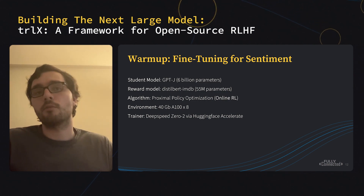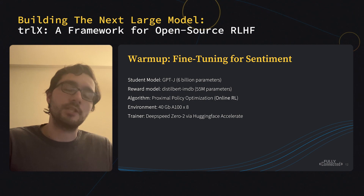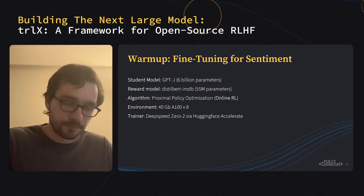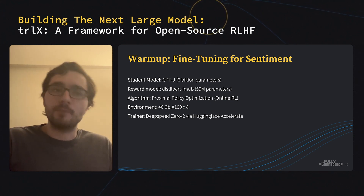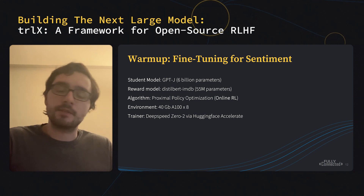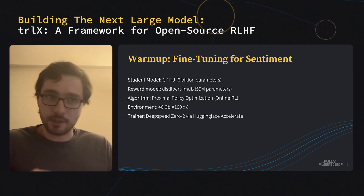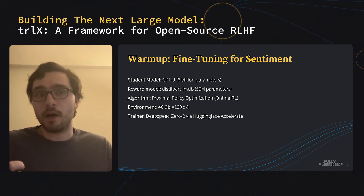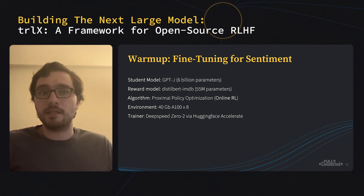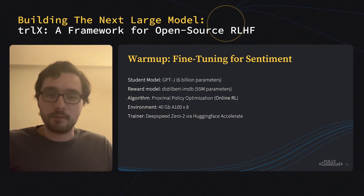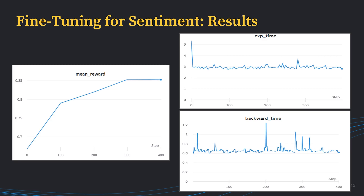To demo the TRLX library, let's do a warm up. Let's say we're fine-tuning GPTJ — a 6 billion parameter model — to produce positive movie reviews. We're going to use a reward model which is DistilBERT IMDB, 55 million parameters, trained to classify movie reviews into positive or negative sentiment. Then we're going to use Proximal Policy Optimization or PPO, which is an online RL algorithm. The environment we'll be training in uses 40 gigabyte A100s and DeepSpeed O2 as our trainer. We see that after a couple of hundred steps the reward is quite high — the reward from DistilBERT is between zero and one, effectively calculating the probability that generated text is positive. The reward looks stable, things increase quickly — life is good.